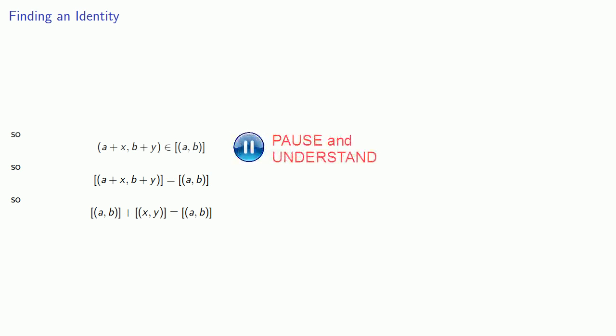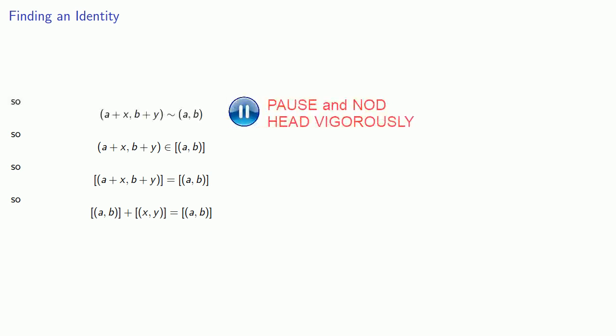So, let's find our identity. So, again, we want this sum to be true, which would happen if our equivalence classes were equal, which would happen if the class representative were in the other equivalence class, which would happen if the class representatives were equivalent, which happens if the outer sum is equal to the inner sum.